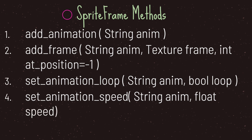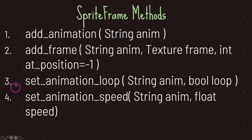To recap the order in which you create your SpriteFrames resource: first use add_animation, then add your frames with add_frame. Next you can optionally set a loop with set_animation_loop and set a speed with set_animation_speed. The two most important methods are add_animation and add_frame.